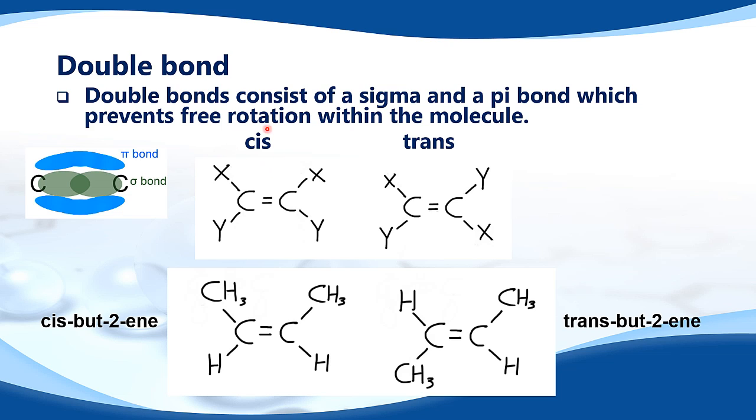So here we have the example of the cis and the trans isomer. The cis isomer has the same groups on the same side of the double bond. And the trans isomer has the same groups on opposite sides of the double bond.